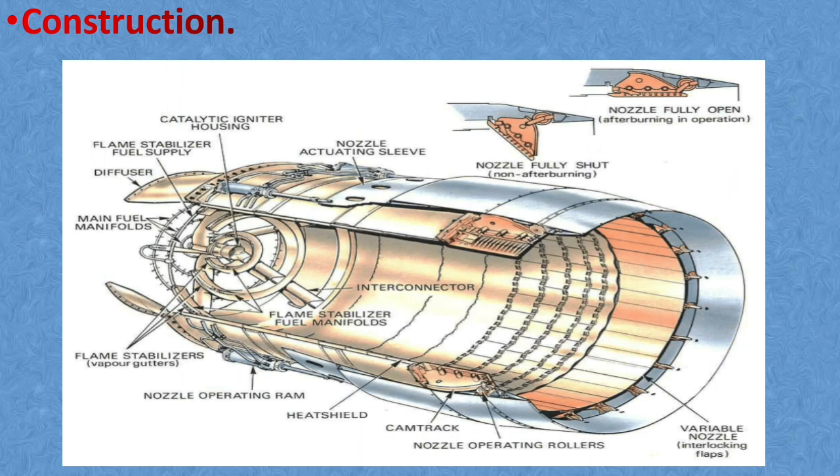After burners, there is a jet pipe which is made up of heat resistant nickel alloy and requires more insulation than the normal jet pipe to prevent the heat of combustion being transferred to the aircraft structure. The jet pipe may be of double skin construction with the outer skin carrying the flight loads and the inner skin the thermal stresses. A flow of cooling air is often induced between the inner and outer skin.